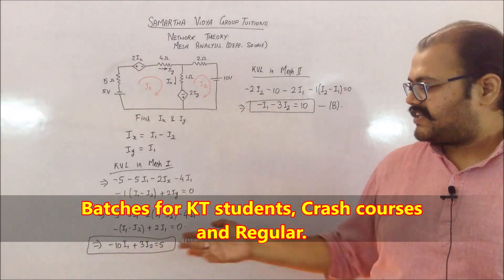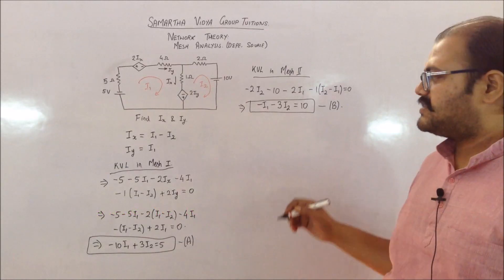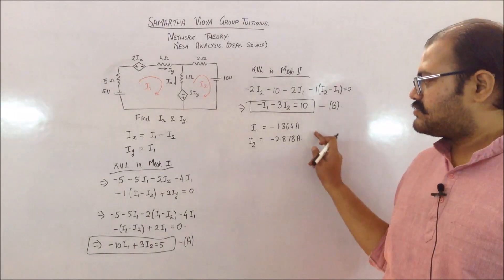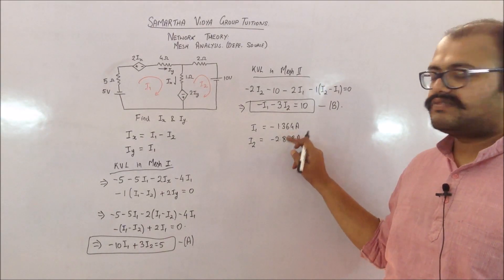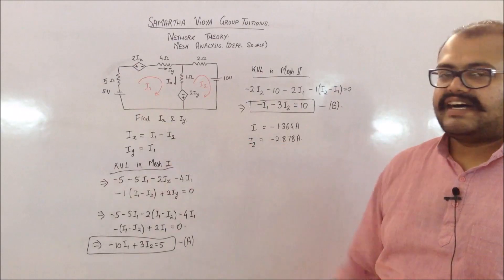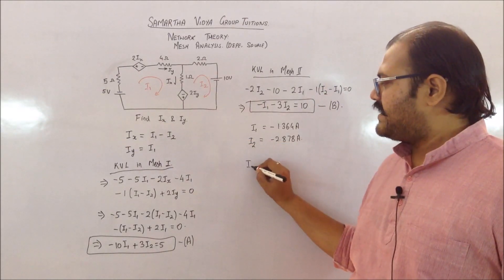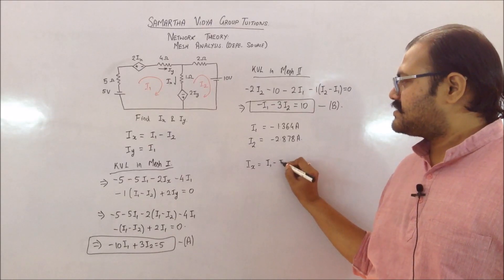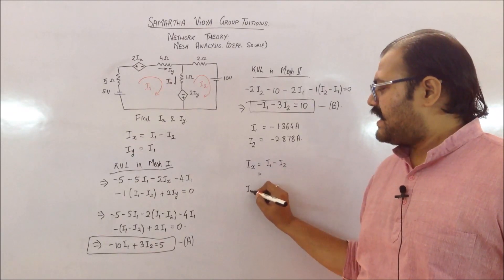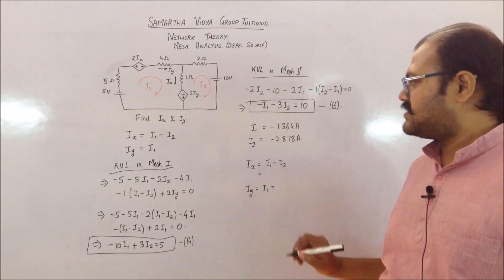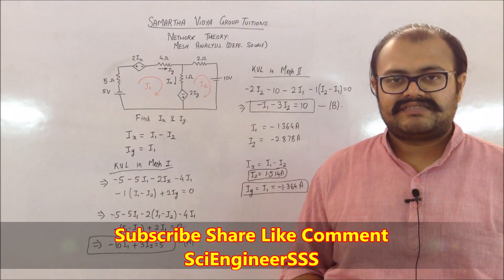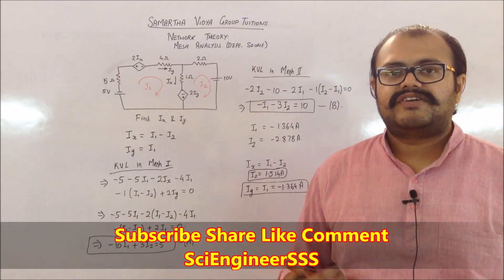We now solve Equations A and B simultaneously. Solving gives I1 equals minus 3.64 A and I2 equals minus 2.878 A. From these, Ix equals I1 minus I2, which gives the corresponding value, and Iy equals I1 equals minus 1.364 A. This is the complete method for mesh analysis with dependent sources.